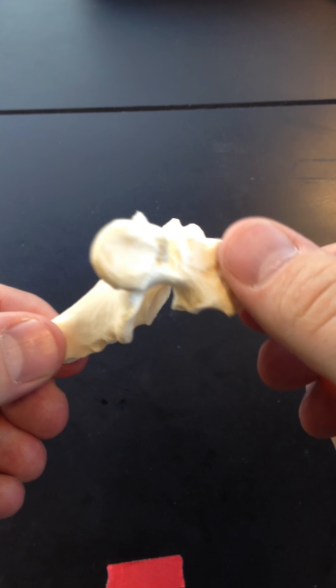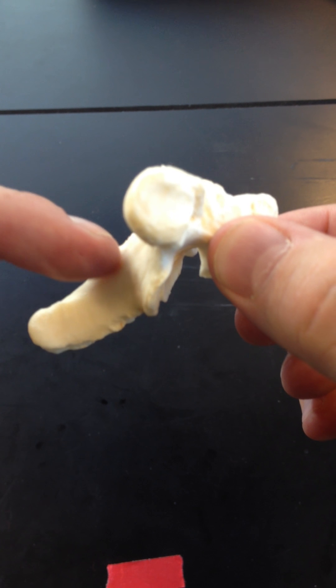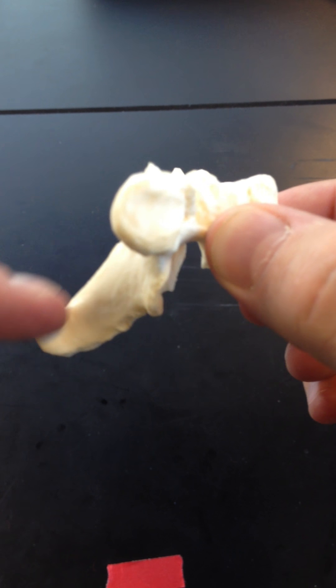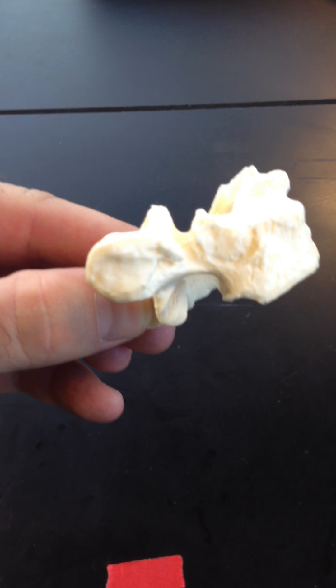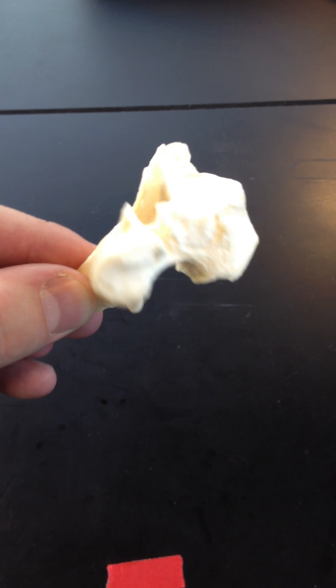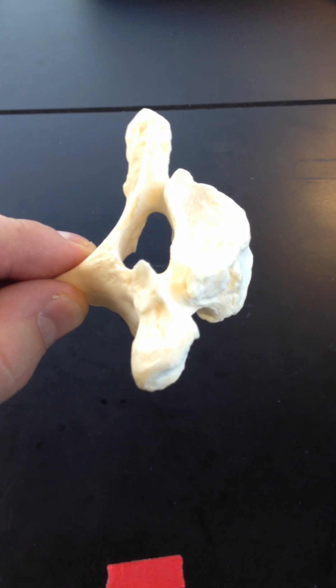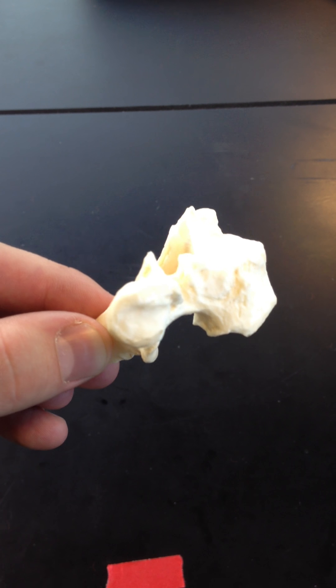The thoracic region is going to have a little bit more inferiorly pointing spinous processes, and it's the only region of the vertebral column that's going to articulate with ribs. So we get some special characteristics, which we'll get to in just a minute.